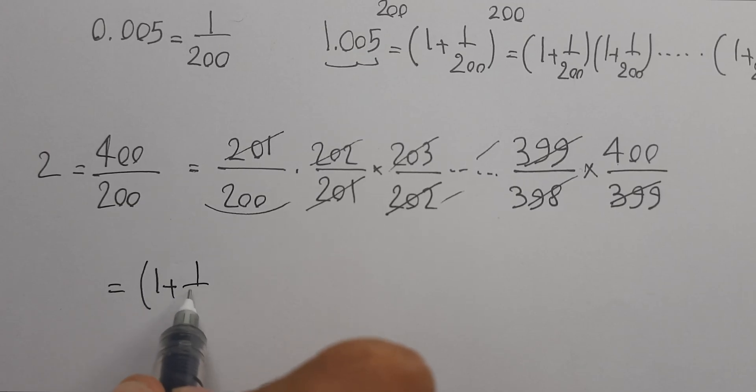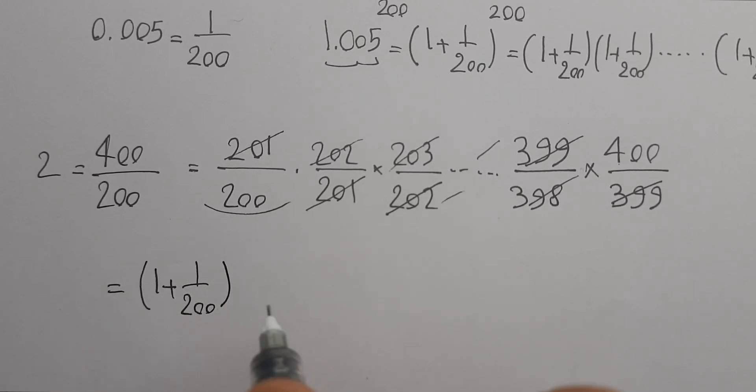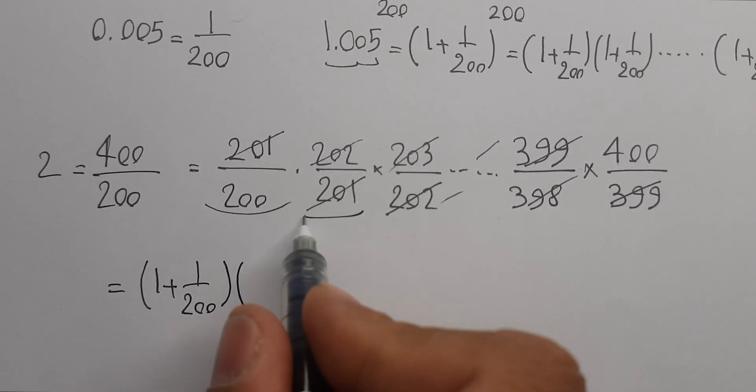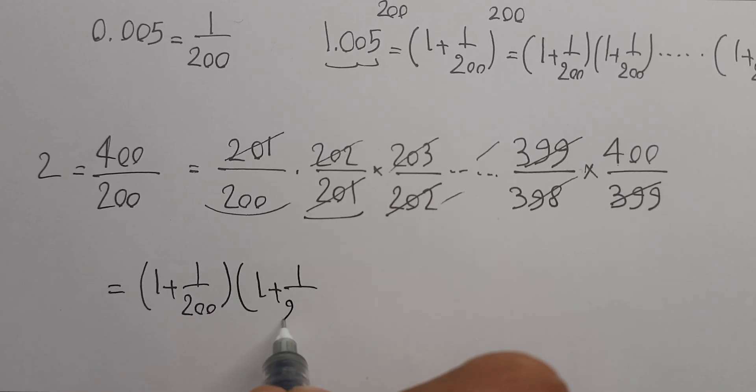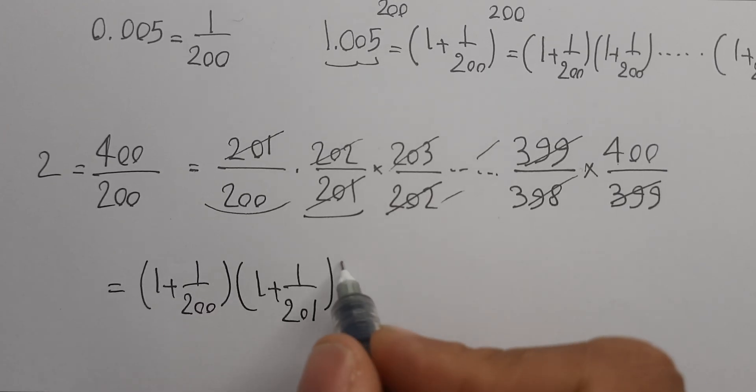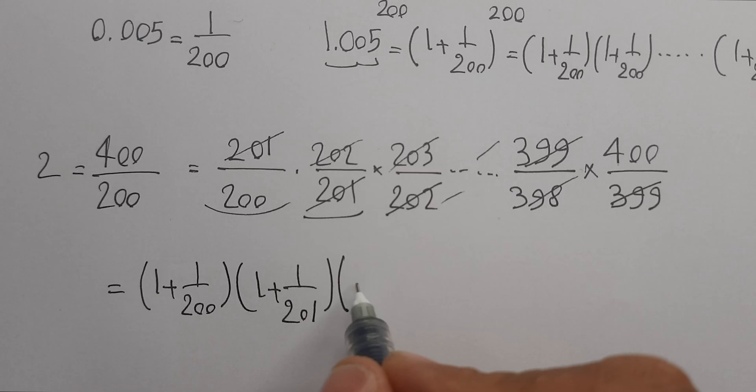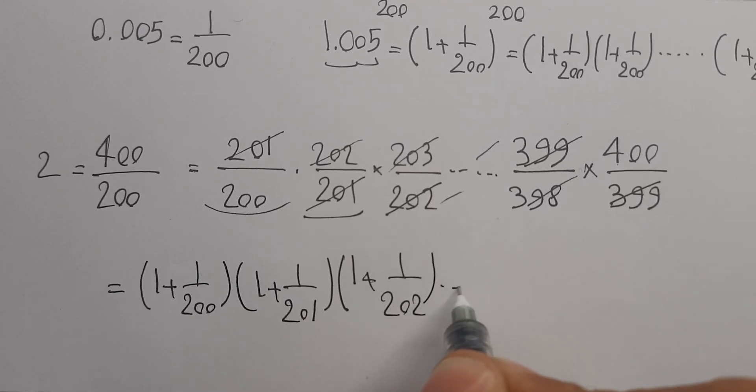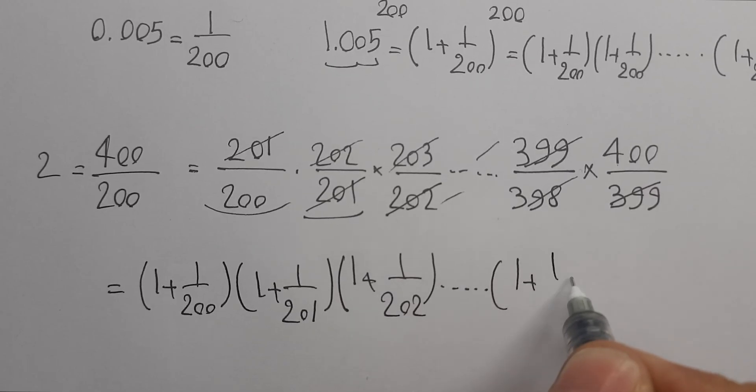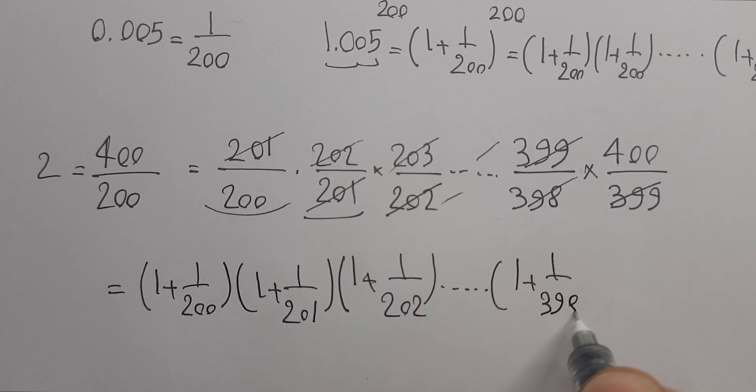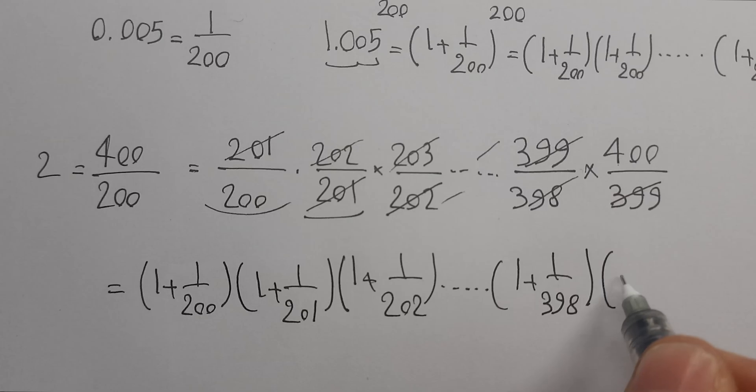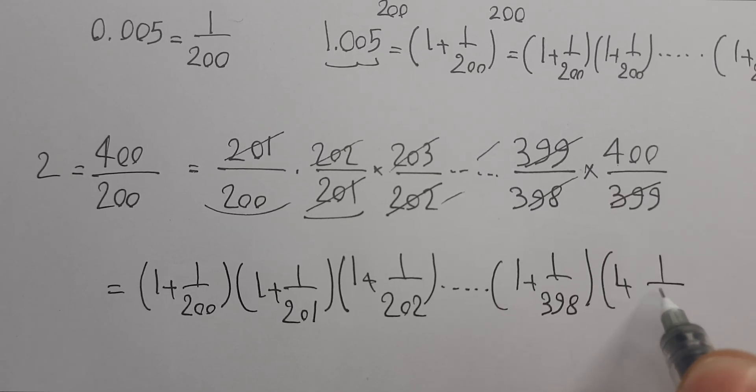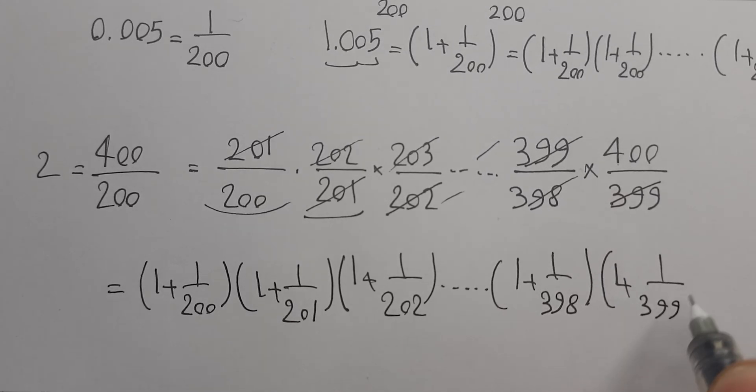This is (1 + 1/200) times (1 + 1/201) times (1 + 1/202)... times (1 + 1/398) times (1 + 1/399).